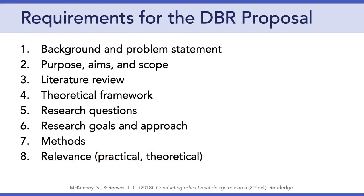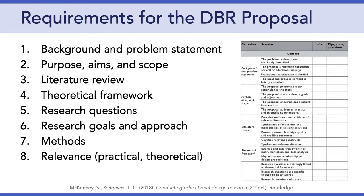Let's start with the DBR proposal. As stated in the assignment, your proposal should cover the eight areas listed here. In general, you have about one page per section, give or take. I'll talk a bit more about that in a minute, but as a reminder, you can find descriptions of each of these areas in Chapter 8 of McKinney and Reeves. In addition, McKinney and Reeves provide a proposal assessment seen here on the right, which I'll be using to review your proposals. This tool is a great way to make sure each section of your proposal is targeted and complete. I encourage everyone to check out the relevant pages of Chapter 8.